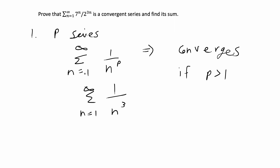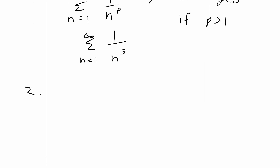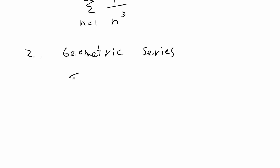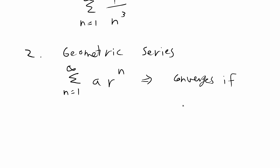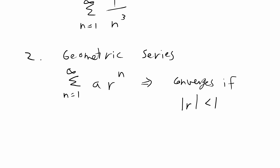This type of broad category of series is called a P series. The second example is going to be a geometric series, an infinite geometric series, and this example in this problem is actually a geometric series. A geometric series is broadly defined as the sum from 1 to infinity of a times r to the n, where a is a coefficient and r is a number or a ratio of numbers to an index n. This general form is a geometric series, and it converges by definition if the absolute value of r is less than 1.